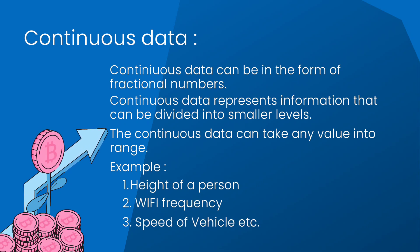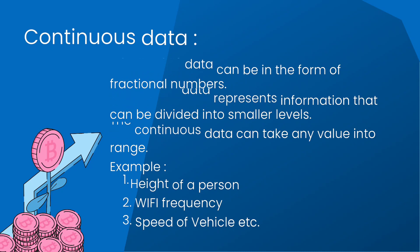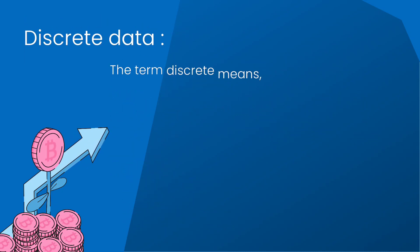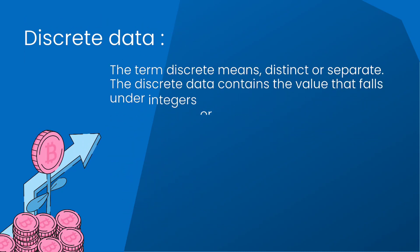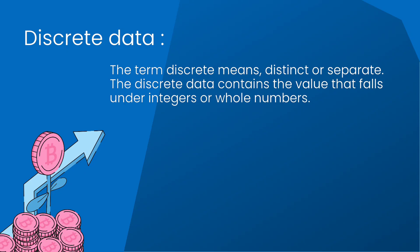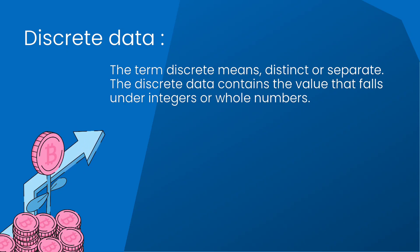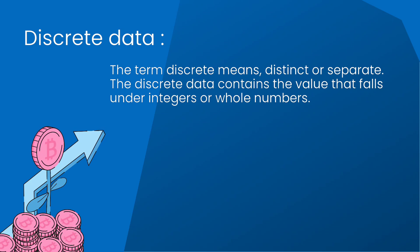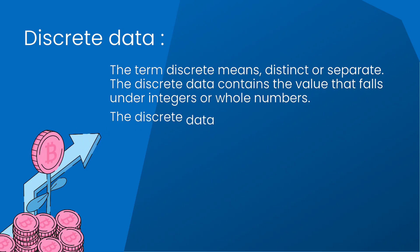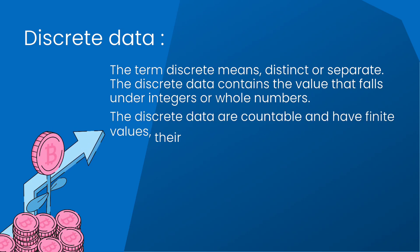Some examples of discrete data are the total number of students in a class, cost of a cell phone, number of employees in a company, number of days in a week, etc. The next type of data is continuous data.